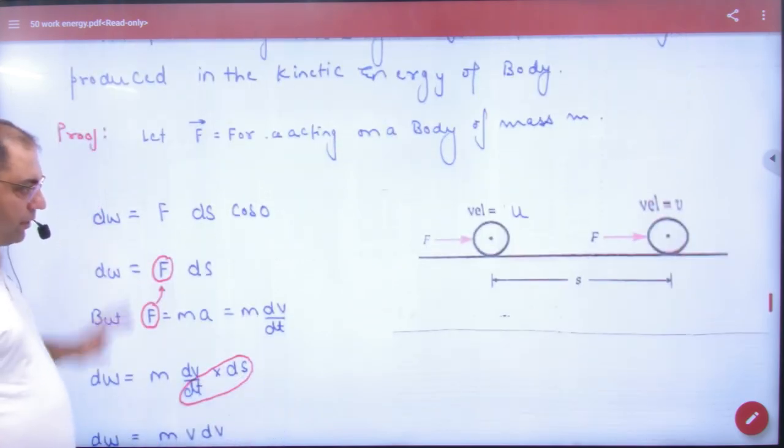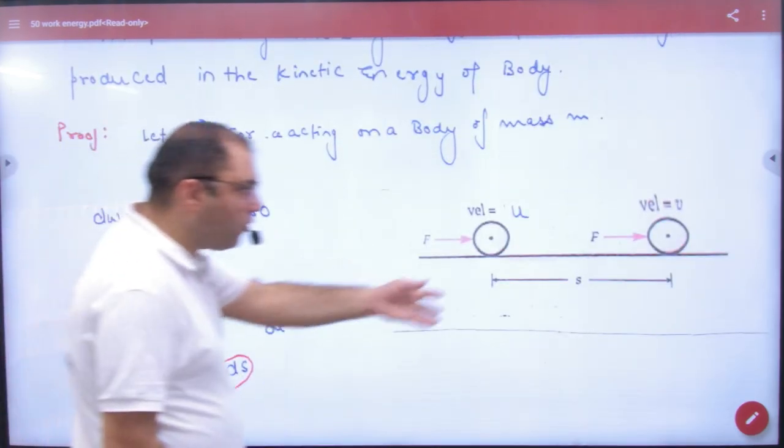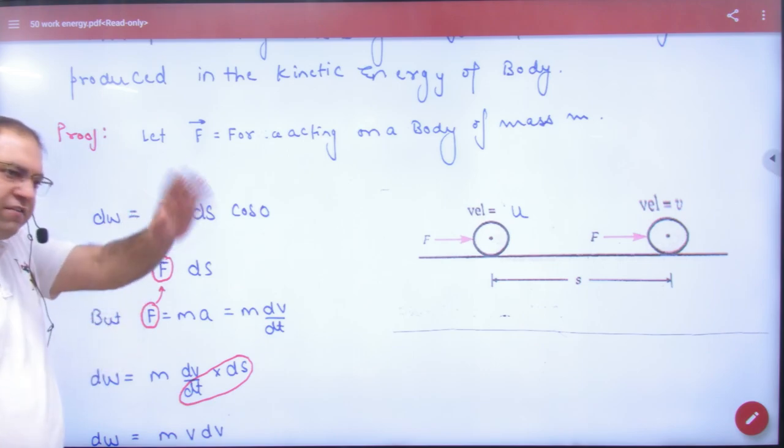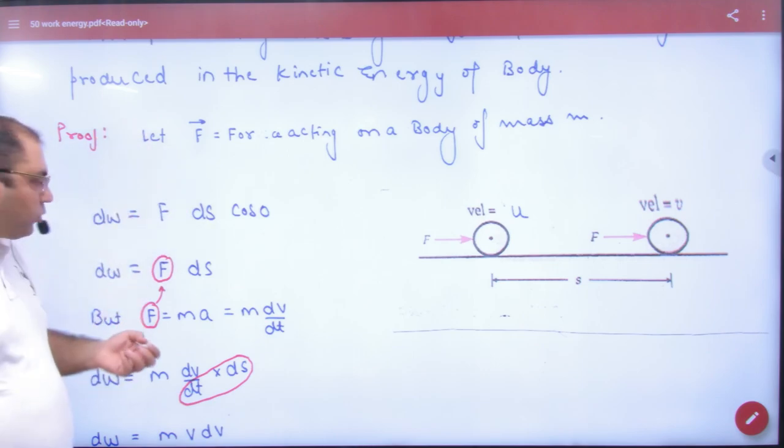So for example, F force and the body of the body is U from V. Dw is equal to F ds cos 0. It is the same. So what is the force?